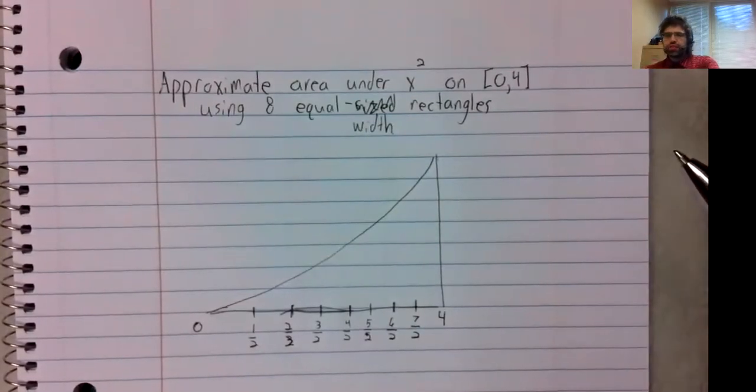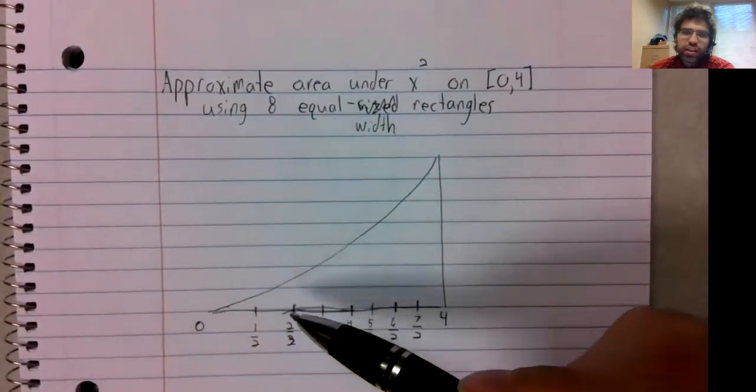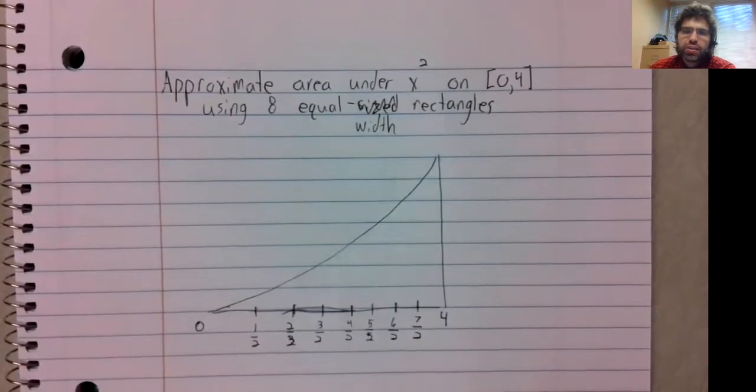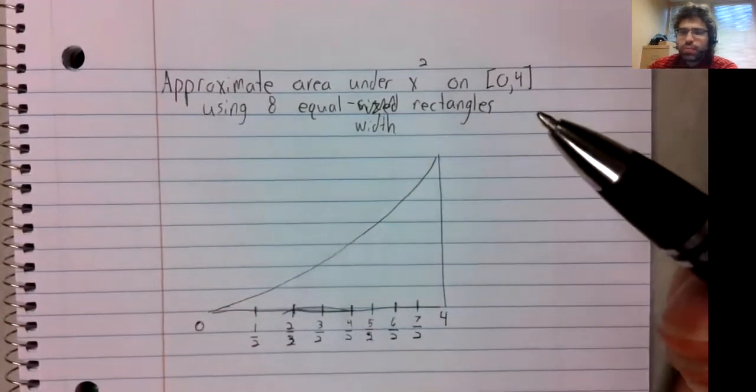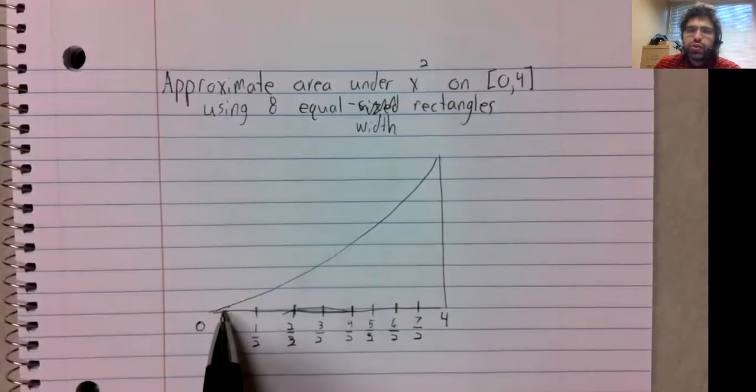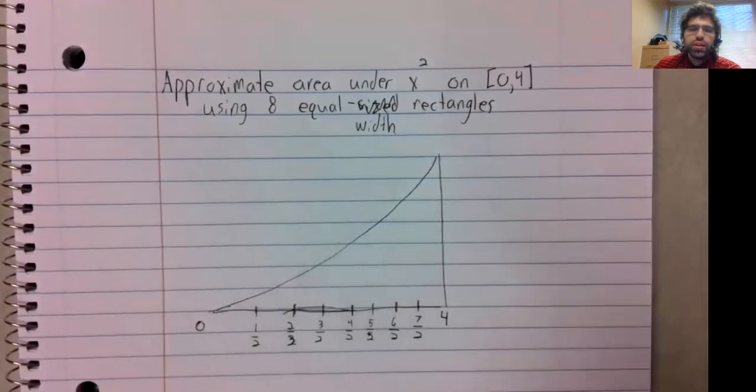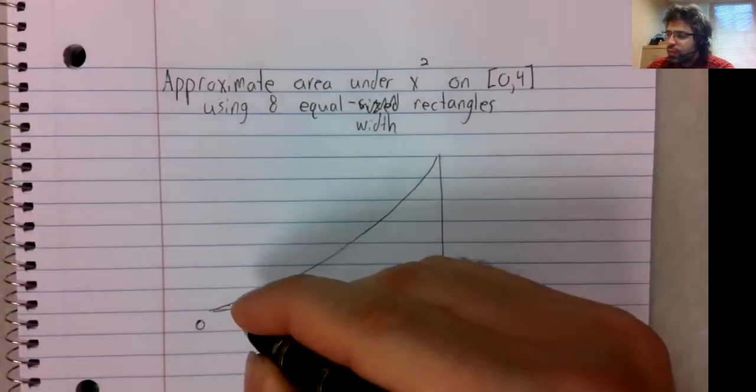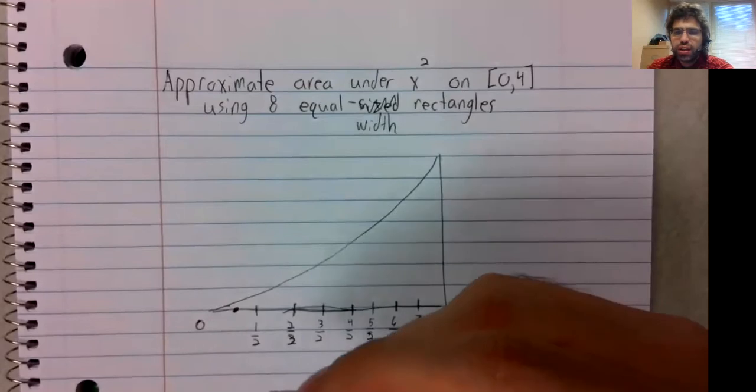And now, for each of these intervals, we need to create a rectangle. And we do that by selecting a point and drawing a line up to the curve. Common points to select include the left endpoint, which in this case would give you a degenerate rectangle, or the right endpoint. But if you can choose, probably the best point to select is the point midway through the interval.